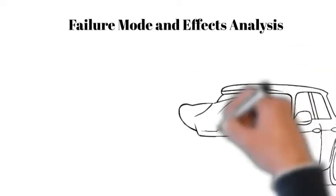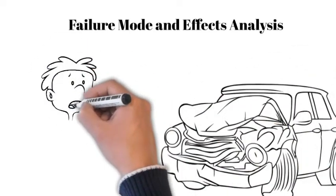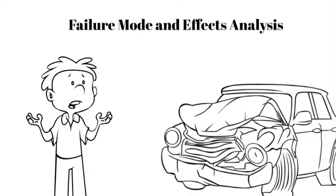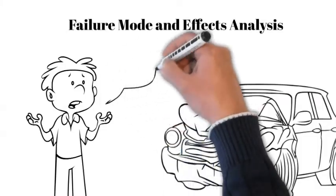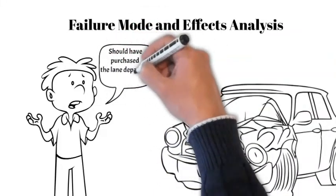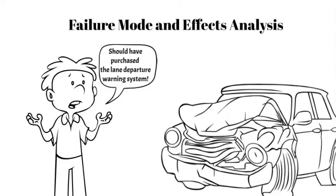Finding the cause of a problem after it has occurred and then correcting it is certainly one way to manage process performance. In most situations, however, it makes more sense to be proactive and prevent it from happening in the first place. We can do this by convening a brainstorming session and then exploring the possible vulnerabilities of the process. Then we can make changes that will minimize the risk of certain events from occurring. This process is called Failure Mode and Effects Analysis, or FMEA.